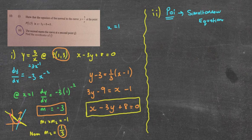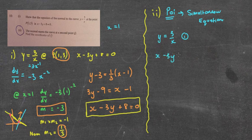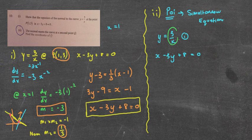We've got two equations: y equals 3 over x, and x minus 3y plus 8 equals 0. We know one solution should be x equals 1, because that's where it cuts in the first place. We can do this via substitution or elimination. This really isn't set up for elimination, so substitution is probably easiest — particularly because y equals 3 over x. Let's substitute 3 over x where the y is.